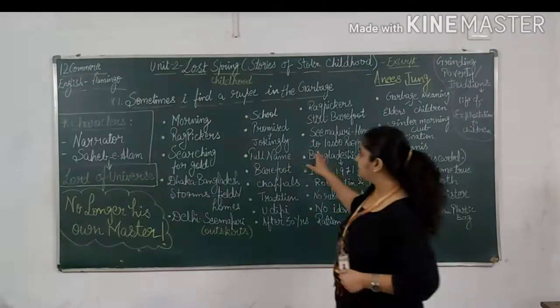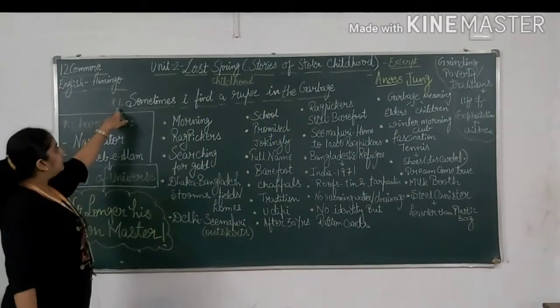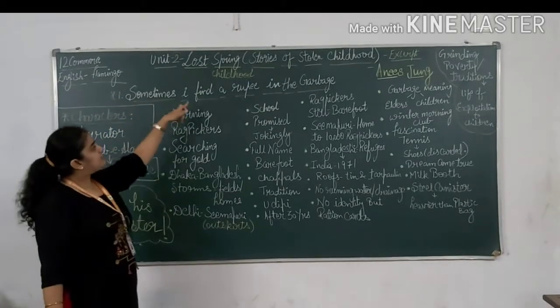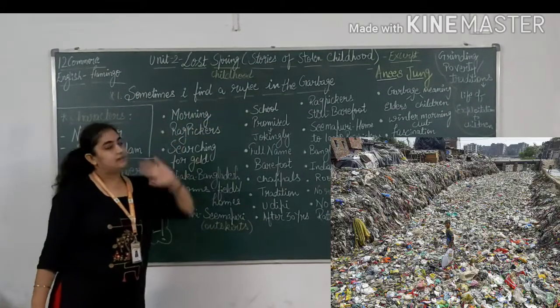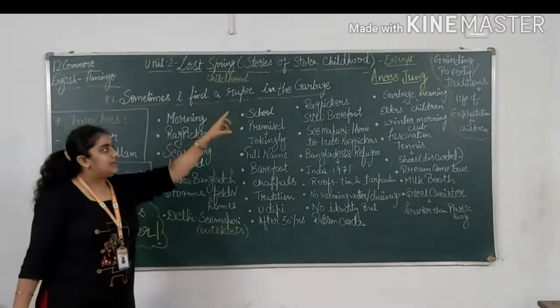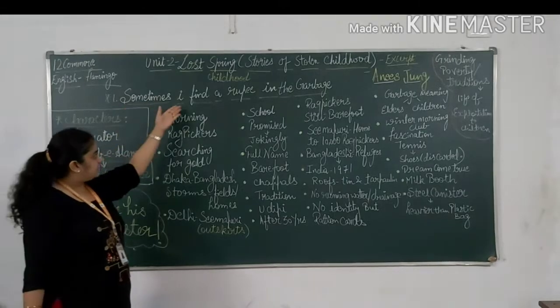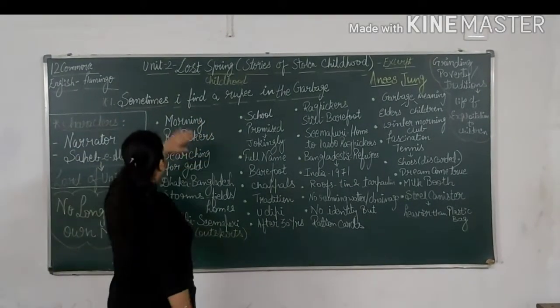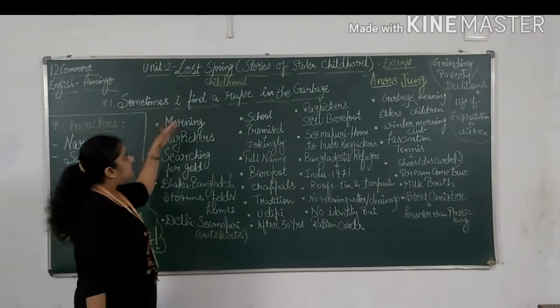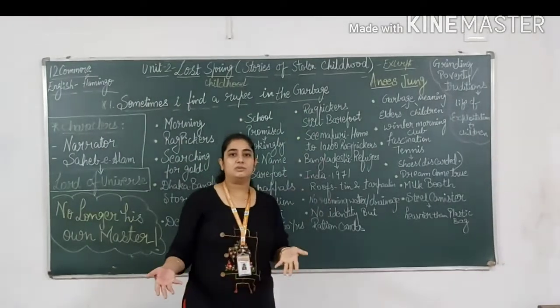So this chapter has two stories. We are discussing the first one, that is: sometimes I find a rupee in the garbage. Now what do you understand is, sometimes I find a rupee in the garbage. Now garbage is what? Koolahar Kaccha.